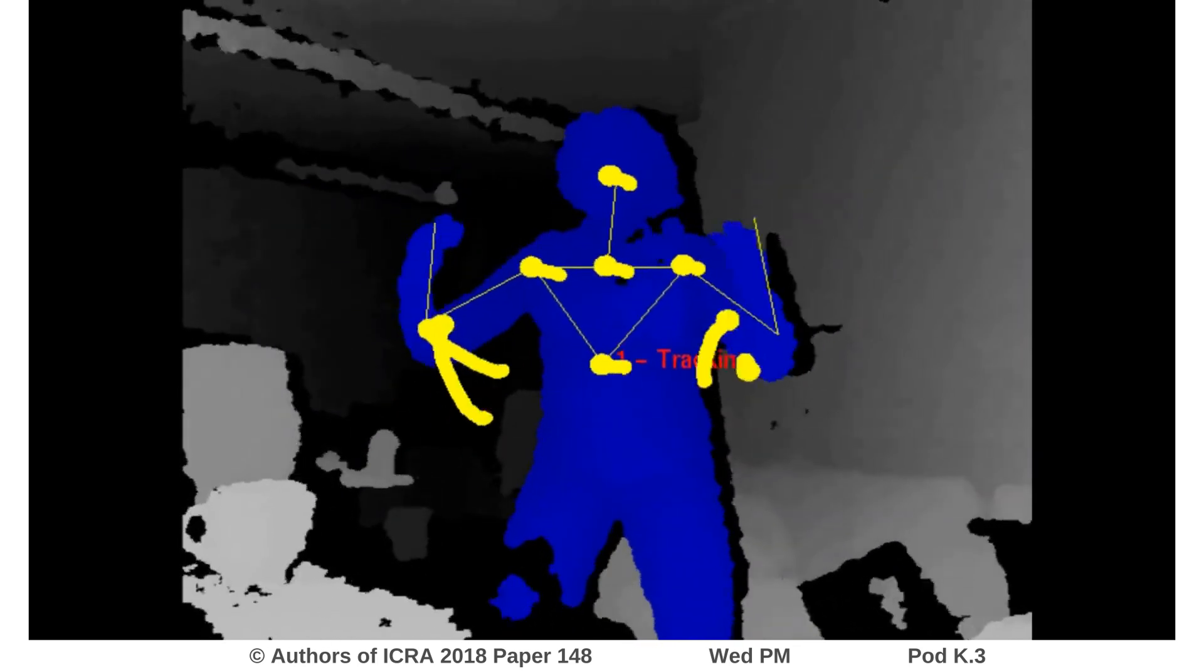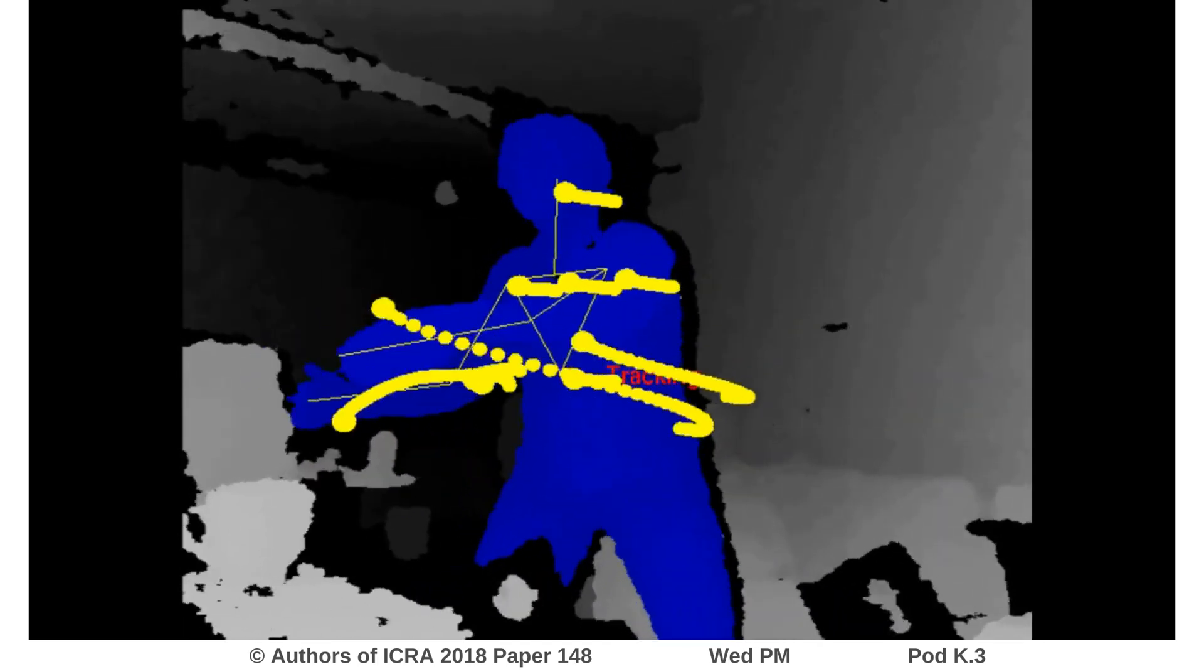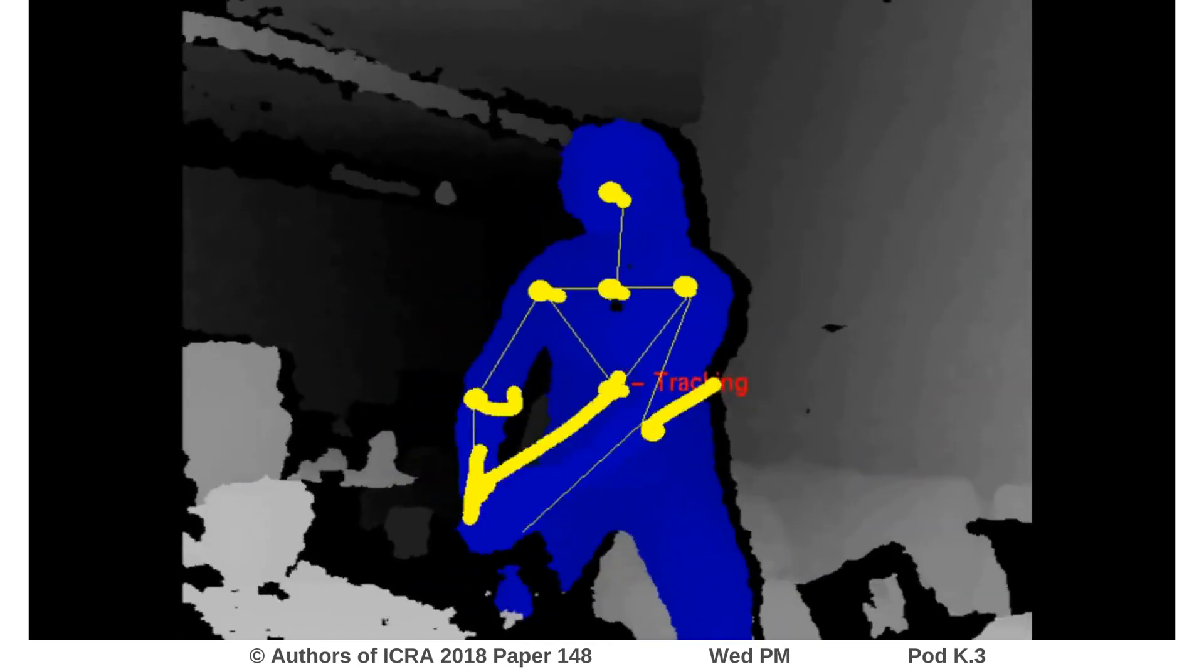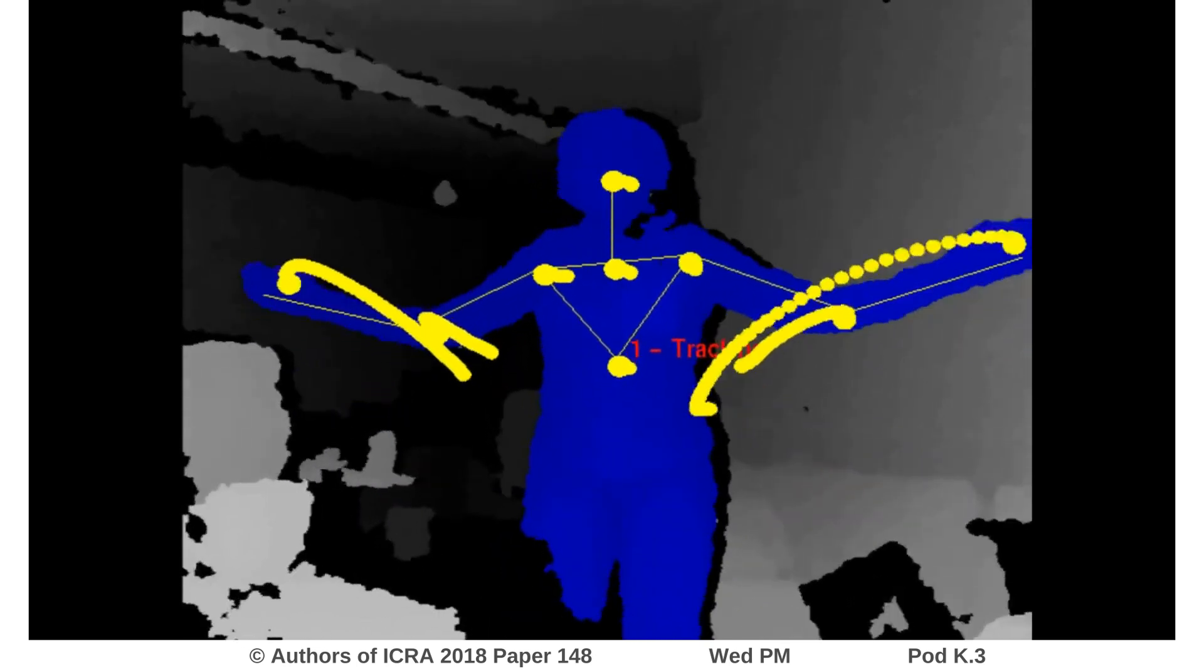Thus, the yellow dots represent a prediction for each joint. The further into the future, the further away is the dot from the current position of the joint.